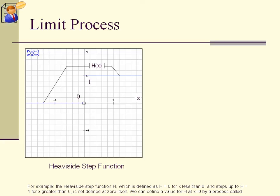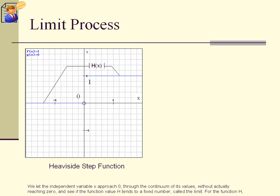We can define a value for h at x equals 0 by a process called approach to the limit. We let the independent variable x approach 0, through the continuum of its values, without actually reaching 0, and see if the function value h tends to a fixed number, called the limit.